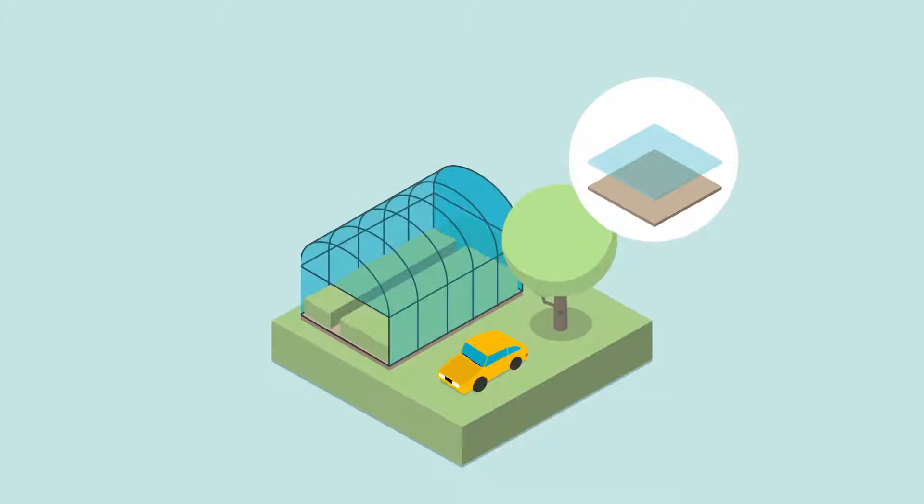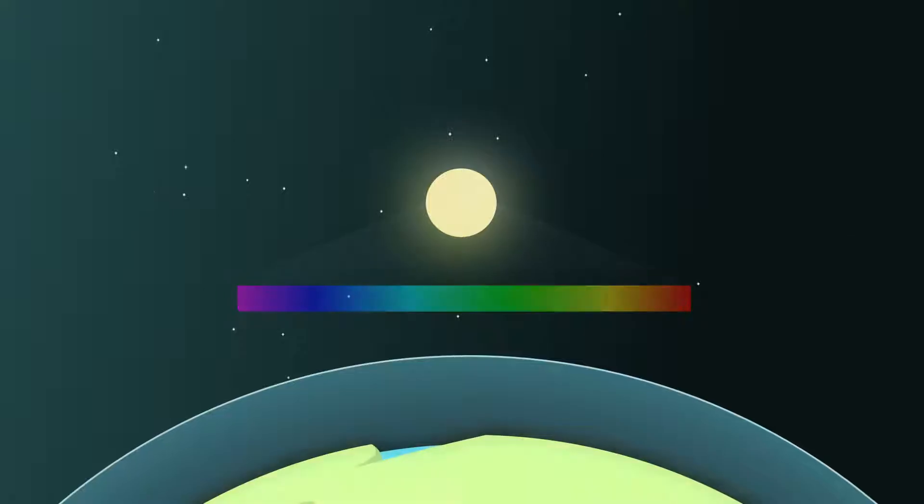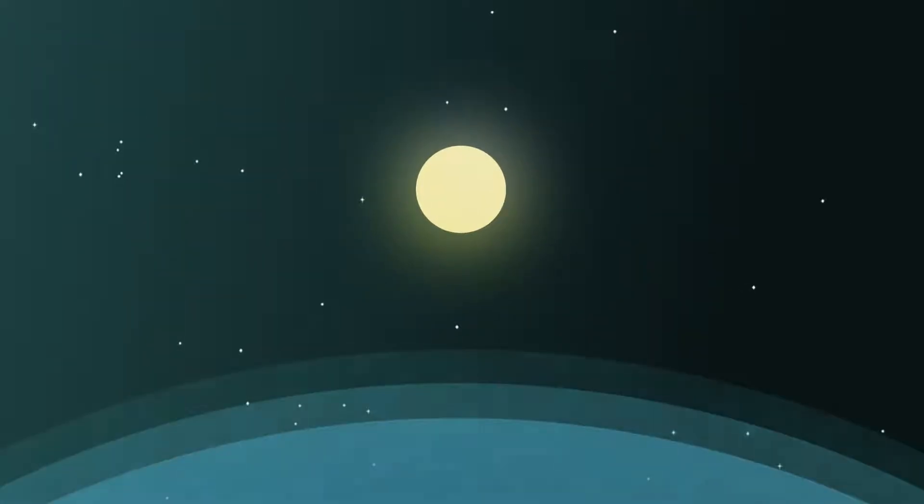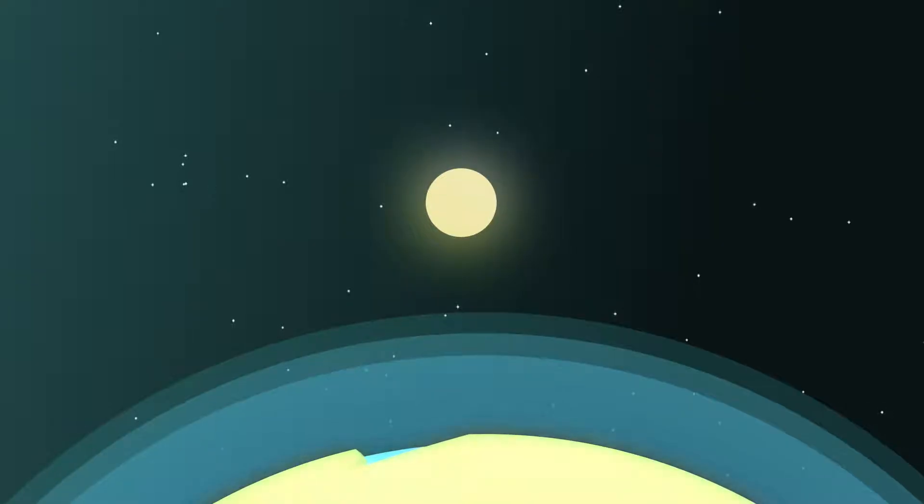So the atmosphere acts a bit like glass letting visible light through to warm the earth. But some of the heat or infrared radiation now given off gets absorbed by certain gases in the atmosphere. And these are the gases we call greenhouse gases. In this way the earth is kept warm and we say there is a natural greenhouse effect.